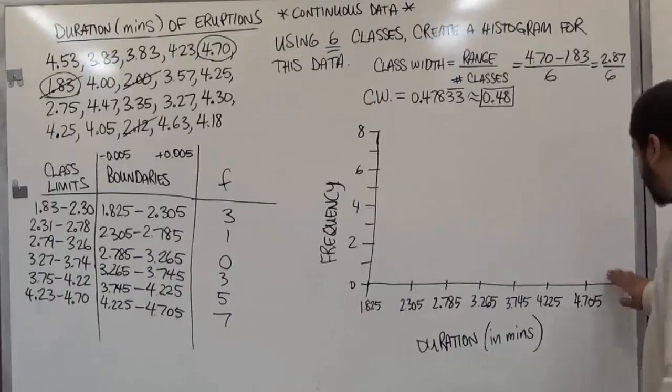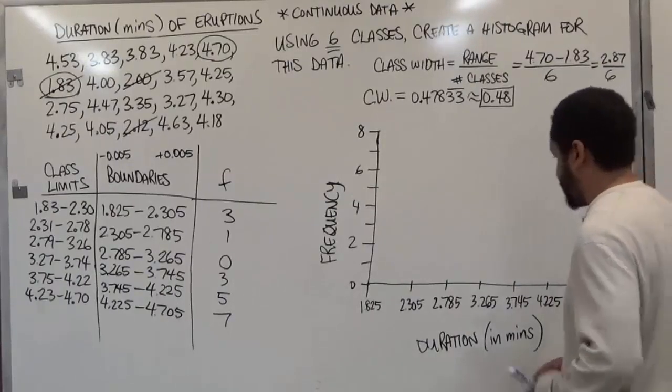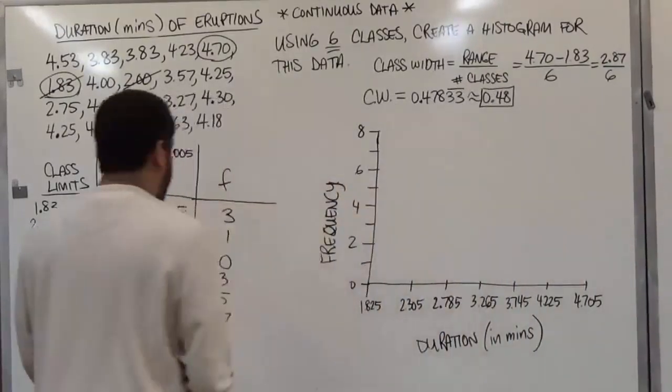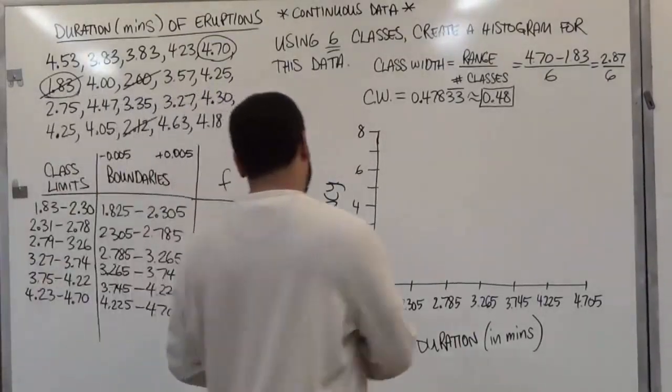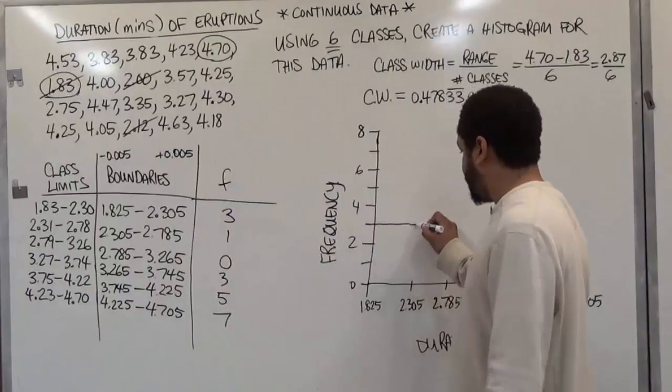We don't need anything else after this here. So we can just wipe this down. And now we're just going to go inserting the frequency bars for each one. The first frequency has a level of 3. So we're just going to insert the 3 here and box that in.